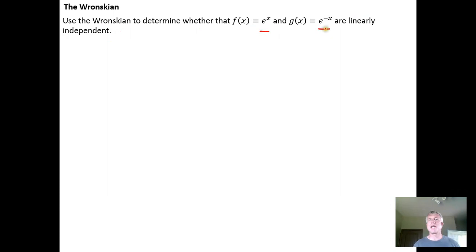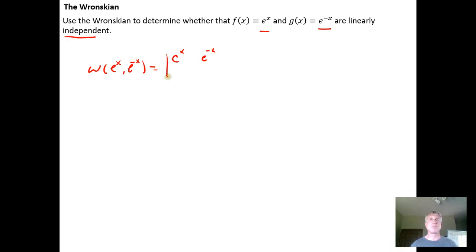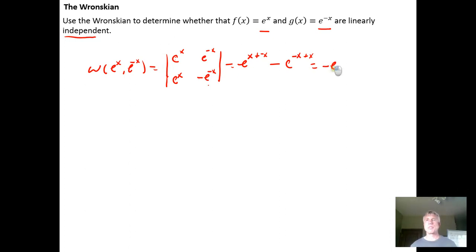Another example: suppose we have eˣ and e^(−x), and want to know whether they are linearly independent or dependent. We calculate the Wronskian by putting eˣ and e^(−x) in row 1 and their derivatives eˣ and −e^(−x) in row 2. The determinant is eˣ·(−e^(−x)) − e^(−x)·eˣ = −e⁰ − e⁰ = −1 − 1 = −2. Since −2 ≠ 0, eˣ and e^(−x) are linearly independent functions.